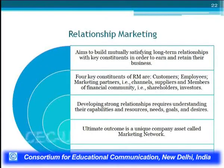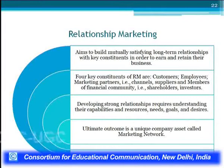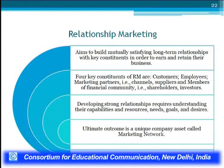The first and foremost component of holistic marketing is relationship marketing. It aims to build mutually satisfying long-term relationships with key constituents in order to earn and retain their business. If marketers are not building long-term relationships with their key customers, they will not be able to survive in the market for a longer period of time. The four key constituents of relationship marketing are the customers, employees, channel members, and members of the financial community or investors. Strong relationships should be developed with all four, depending on the needs, resources, goals and desires of the organization. The ultimate outcome of relationship marketing is the marketing network.